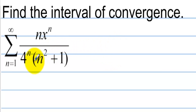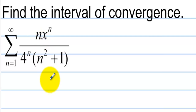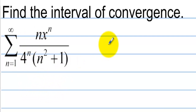Find the interval of convergence. Here we have a series n equals 1 to infinity of n times x to the n over 4 to the n times n squared plus 1. Since we have a variable, we're going to have to find the values that cause this to converge.